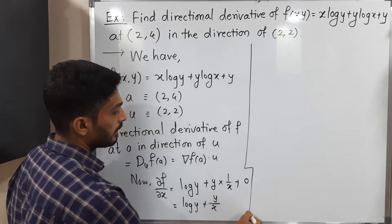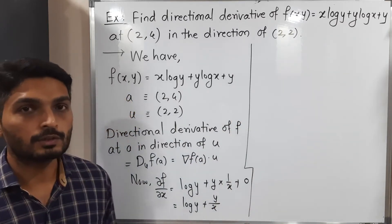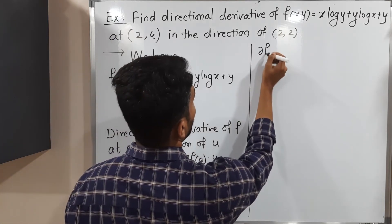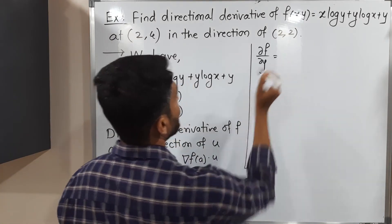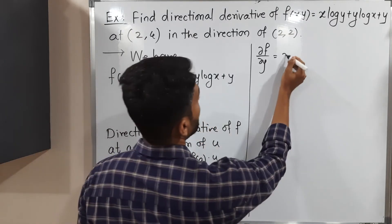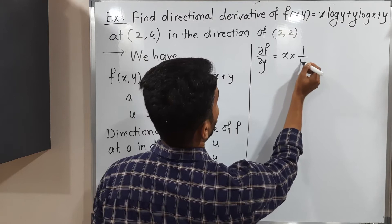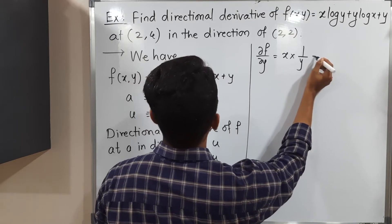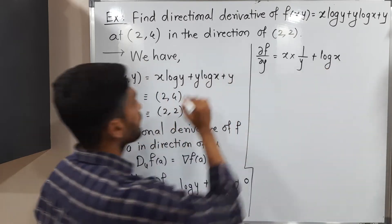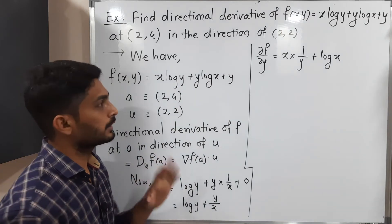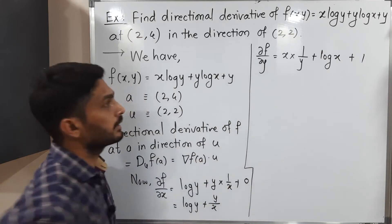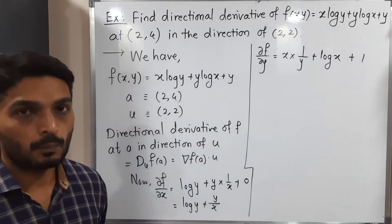Now let us calculate ∂f/∂y. Taking derivative with respect to y, x is constant. Derivative of log(y) is 1/y. log(x) is constant, so derivative of y gives log(x). And the last term, derivative of y is 1. So ∂f/∂y = x/y + log(x) + 1.